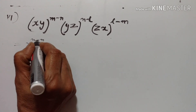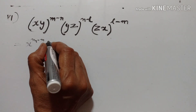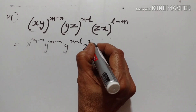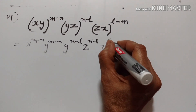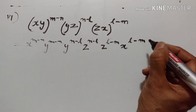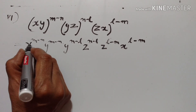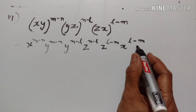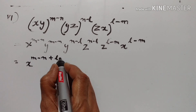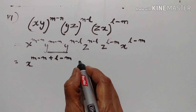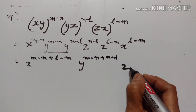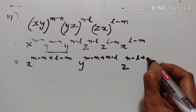X raised to the power of M minus N, Y raised to the power of M minus N, Y raised to the power of N minus L, Z raised to the power of N minus L, Z raised to the power of L minus M, X raised to the power of L minus M. Let us add the powers of x: x raised to the power of m minus n plus l minus m, y raised to the power of m minus n plus n minus l, z raised to the power of n minus l plus l minus m.